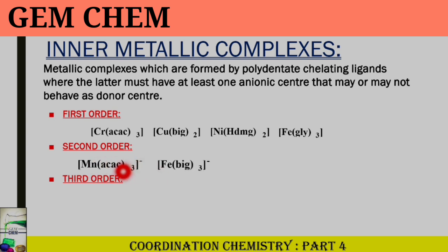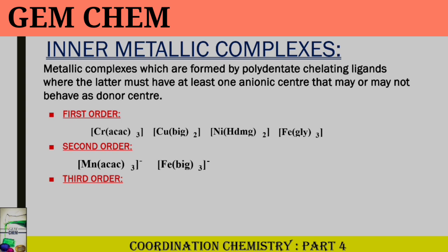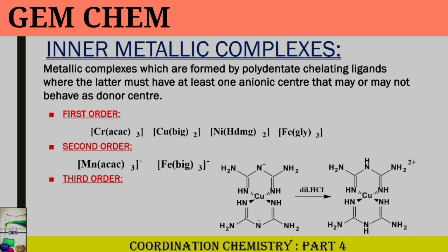In the second order, we have anionic complex formation. Examples include [Mn(acac)₃]⁻ and [Fe(bipy)₃]⁻. These are anionic complexes where the charge of the metal center is more than satisfied by the polydentate anionic ligand.